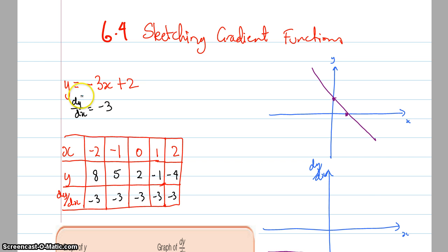So if I have this equation here, y equals negative 3x plus 2, that graph looks a little bit like this. It has two intercepts that I can find out. By doing the derivative of negative 3x plus 2, I can find that the derivative is negative 3.